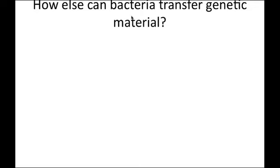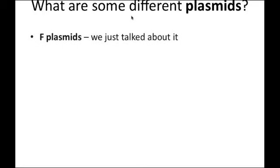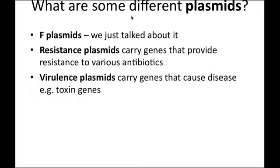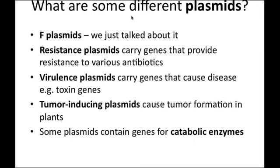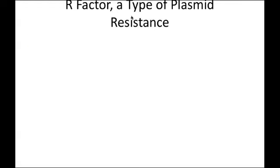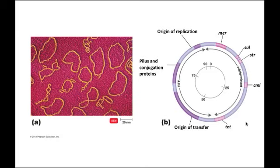Beyond transformation, transduction, and conjugation, bacteria can also gain new information through plasmids and transposons. Plasmids can carry antibiotic resistance genes, virulence factors, tumor-inducing sequences for plants, or genes for breaking down new carbon sources. R factors — resistance plasmids — carry multiple antibiotic resistance genes, making bacteria very difficult to eliminate with normal antibiotic treatments.